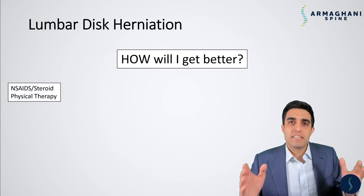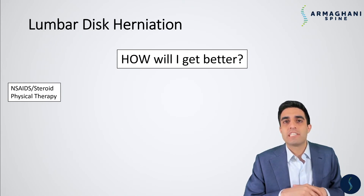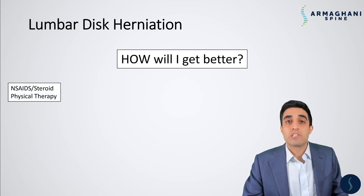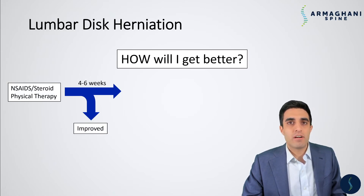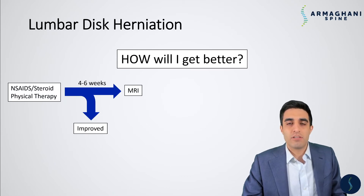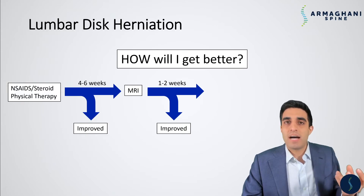How will you get better? First, I do a thorough history and physical exam to determine whether a lumbar disc herniation is the cause of your discomfort. We then prescribe a short course of anti-inflammatories, steroids, and physical therapy. I generally bring patients back in four to six weeks — the vast majority are improved by then. If not, we get an MRI for more information. In one to two weeks, patients return with MRI results, and some are miraculously improved — the body has disintegrated the disc herniation on its own, with no remaining inflammation or compression.